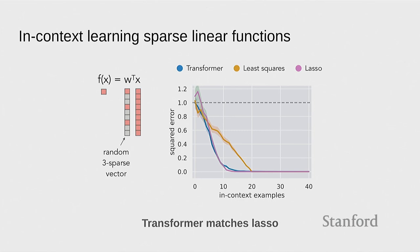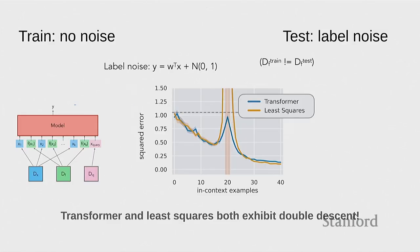Question about the label noise: was it always Gaussian noise? Yes, the label noise is just adding Gaussian noise. Question: how well would it work if you gave it one y that's way out there as an outlier? That would probably break least squares because least squares has no regularization — it's not ridge regression — so it's going to be thrown off by that label. And the transformer — we didn't do that exact experiment, but I imagine it would also be distracted.